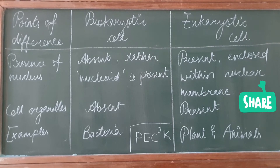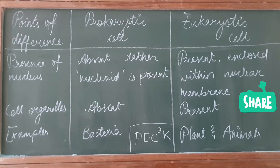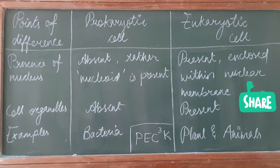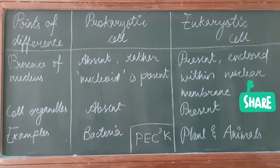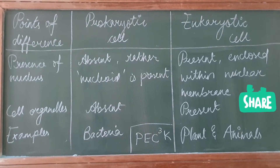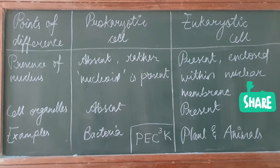The code word for remembering this entire difference is PECQK: P is presence of nucleus, E is examples, C is cell organelles, cell wall, and number of chromosomes, and K is kind of cell.